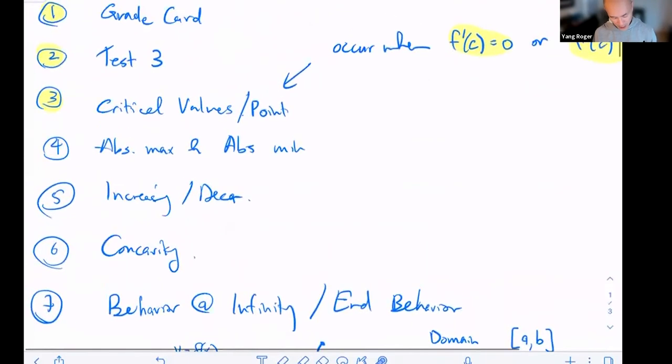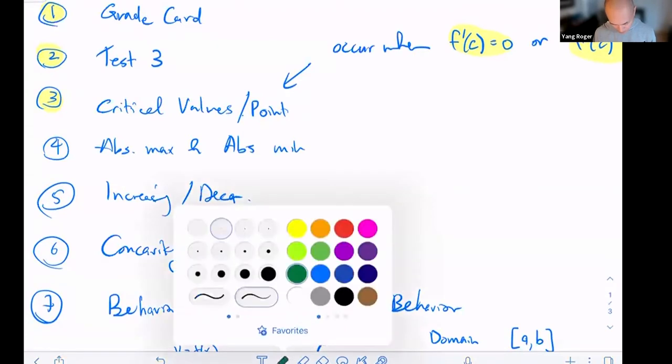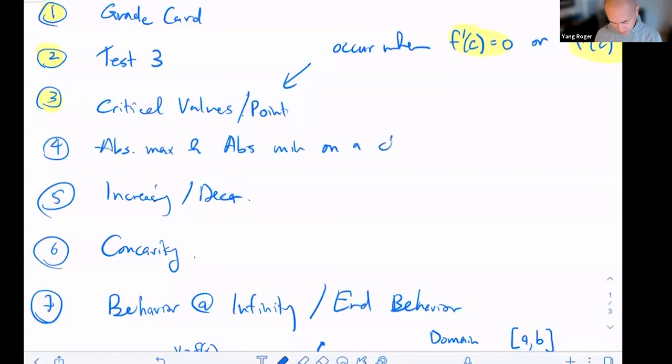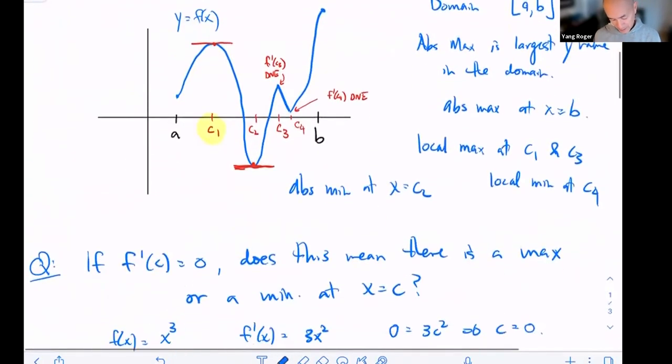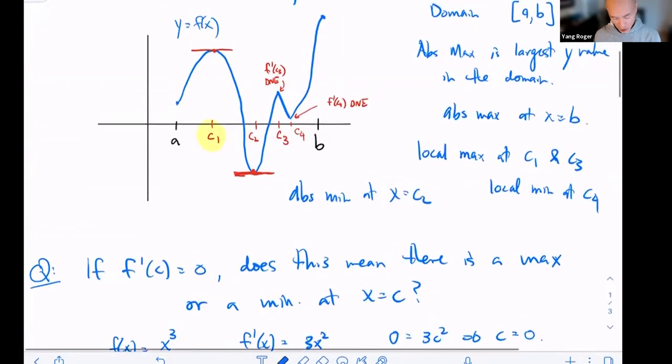But before I do that, I really want to talk about the idea of absolute maximums and absolute minimums on a closed interval. So our methodology for figuring this out is really straightforward. They call it the closed interval method.